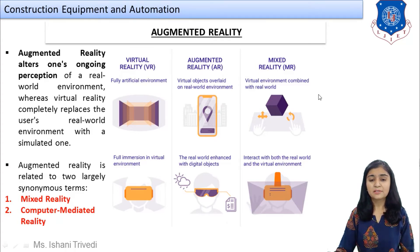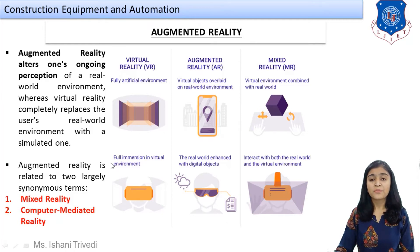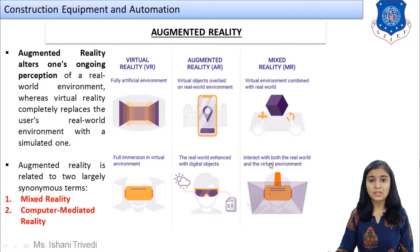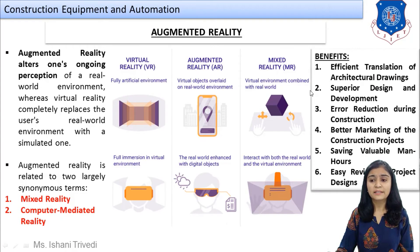Augmented reality is related to two sections: mixed reality and computer-mediated reality. In virtual reality, full immersion in the virtual environment is done. In augmented reality, the real world is enhanced with digital objects. In mixed reality, you interact with both the real world and virtual environments. Hopefully you now understand the difference between virtual reality and augmented reality.